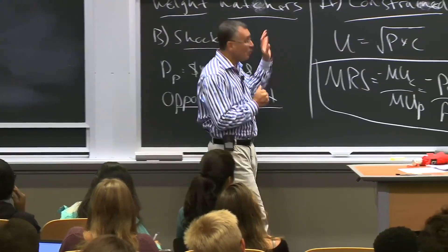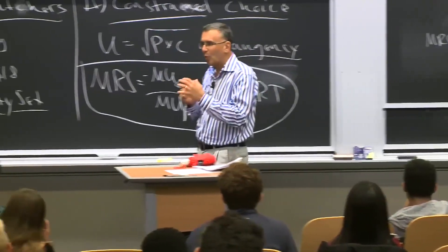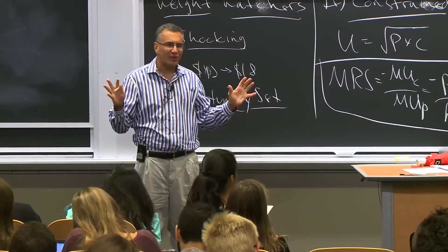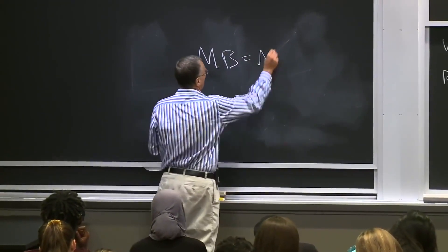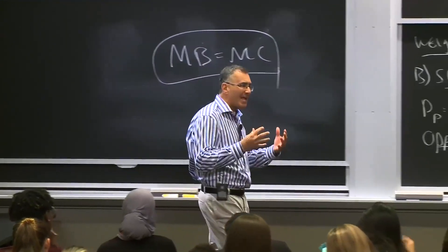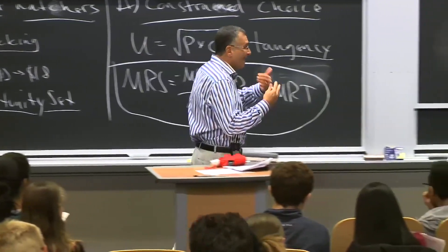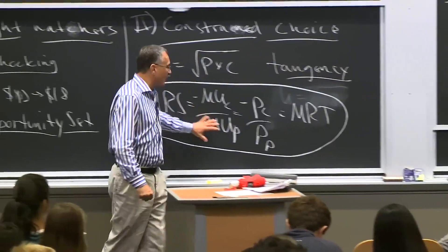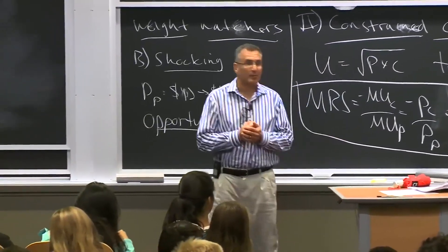If you understand this, you're essentially done with consumer theory. This is the core: the whole course is fundamentally about one equation — marginal benefits equal marginal costs. Everything we do is about weighing the marginal benefit of an activity against its marginal cost. Here the marginal benefit is the MRS and the marginal cost is the MRT, and we set them equal.